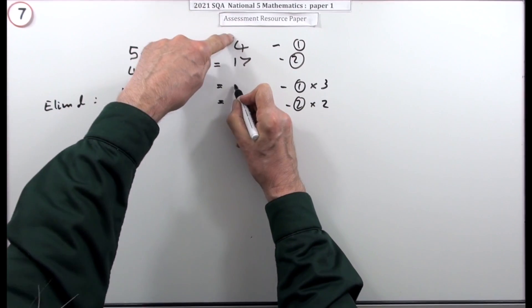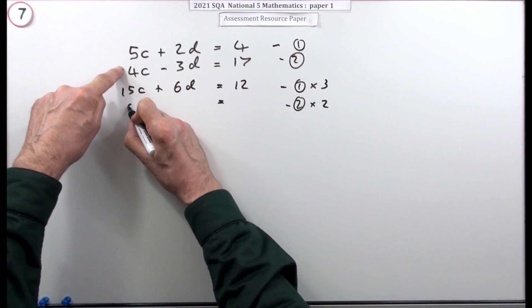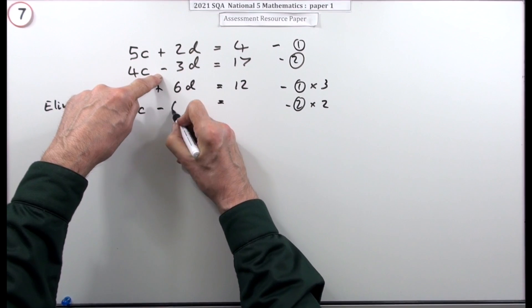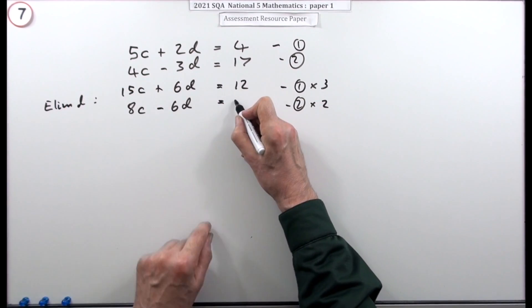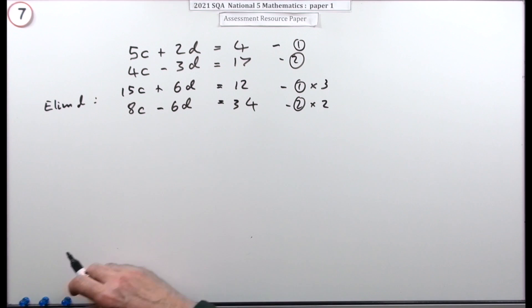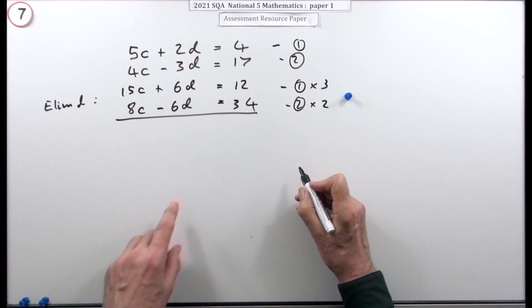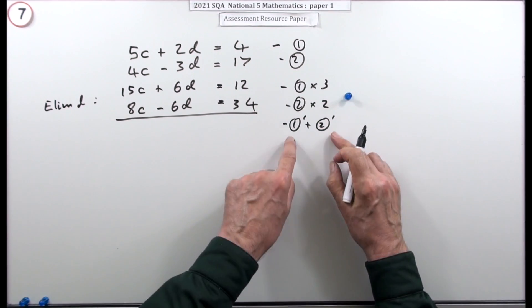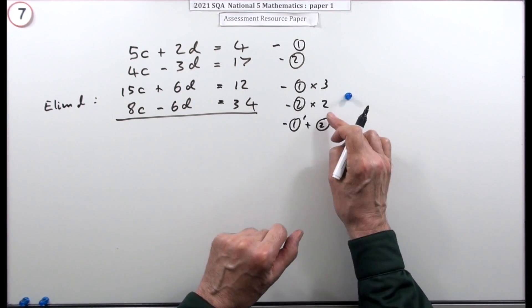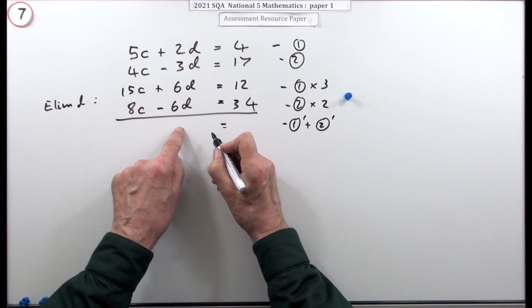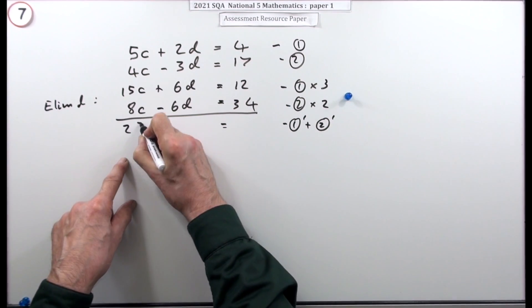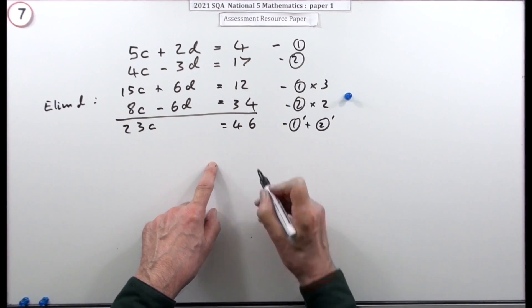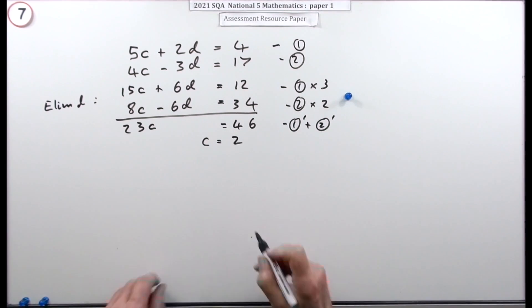15c, 6d equals 12. Everything here gets multiplied by 2: 8c minus 6d equals 34. Now that scaling gets the first mark, going to scale them up, multiply your equations up. Now all I need to do here is add them together, so I'm just going to take the one and add on the two. Well the whole plan was they've disappeared, so I've got 23c is equal to 46. That's nice because that's double it, which means c is equal to two.